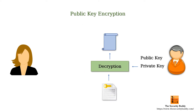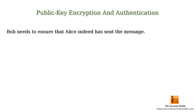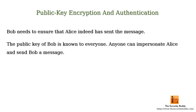As the private key of Bob is secret to Bob alone, no one other than Bob can decrypt and read the message. But how can Bob ensure that Alice indeed has sent the message? The public key of Bob is known to everyone, so anyone can impersonate Alice in this case and send Bob a message.